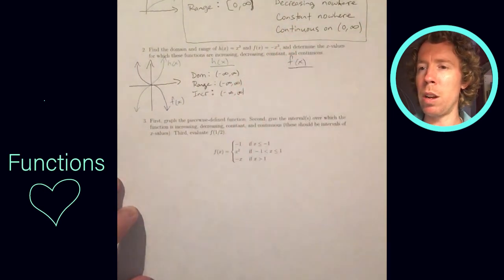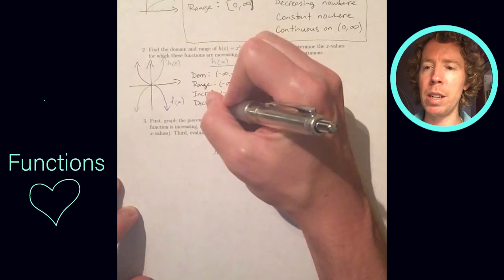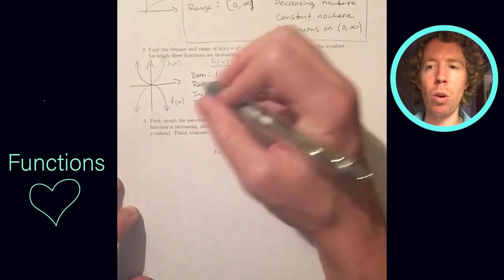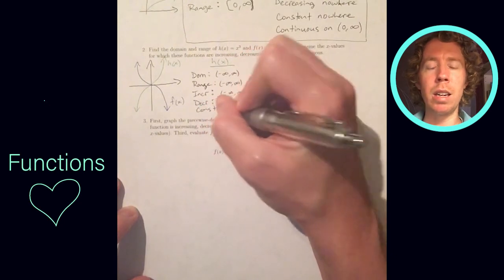So we've talked about domain and range for both of those. For increasing, for h of x, as you move from left to right, it's increasing the whole way. So that's the entire domain. It's not decreasing anywhere.